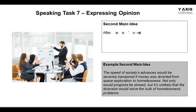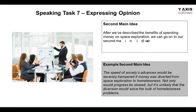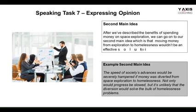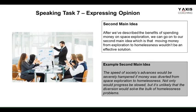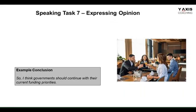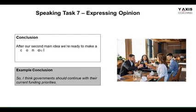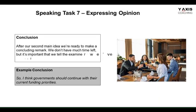The second idea focuses on continuing from the first point: 'The speed of society's advances would be severely hampered if money was diverted from space exploration to homelessness. Not only would progress be slowed, but it's unlikely that the diversion would solve the bulk of homeless problems.' When expressing your opinion, have a variety of opinions and pick the top two or three while responding. Conclude with something like: 'I think governments should continue with their current funding priorities.' All three points should be incorporated within 90 seconds.